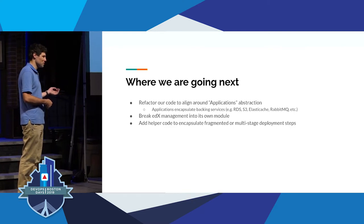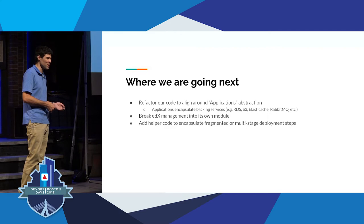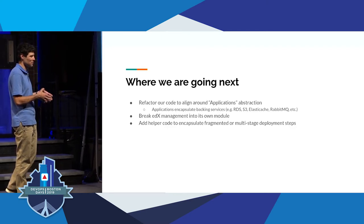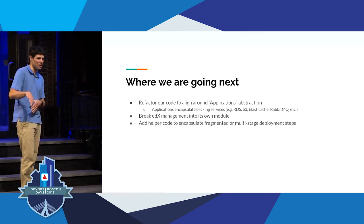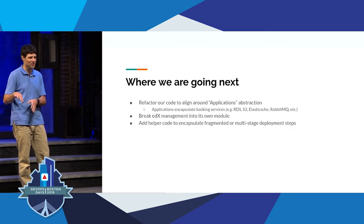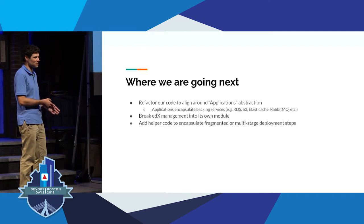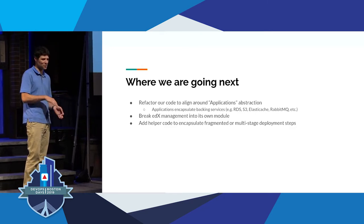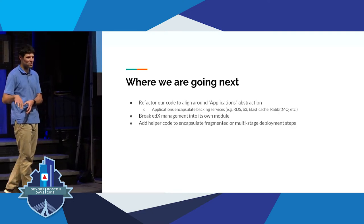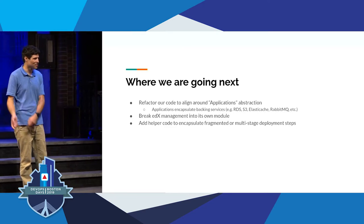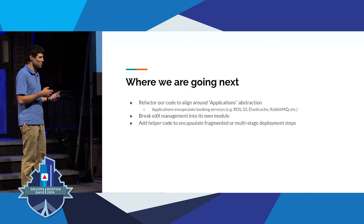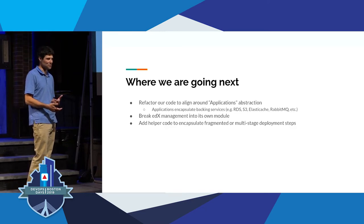Because edX was one of the first services we had to manage using our infrastructure automation, it sort of leaked into everything else. A decent portion of our core infrastructure codebase is dedicated to just edX. We need to break that out into its own component so we can deploy it as its own thing without it winding through the rest of our codebase accidentally. By factoring edX into its own component, anybody else who needs to run it will be more able to use the work we've done — whereas right now it's fairly tightly coupled to the specifics of our environment. Everything we do is open source.